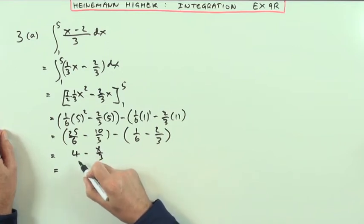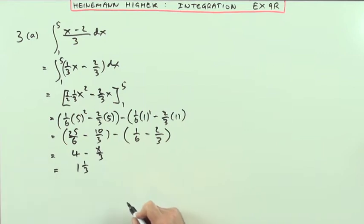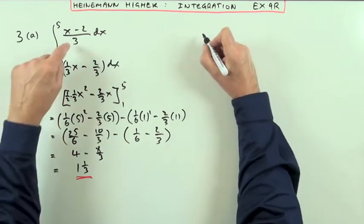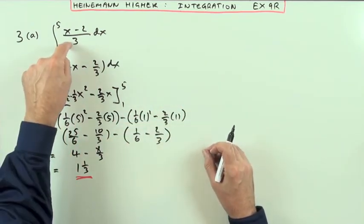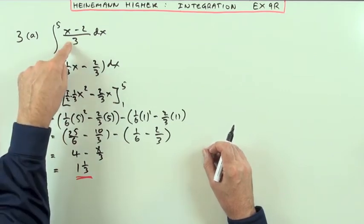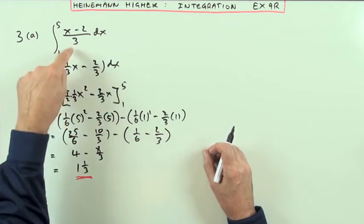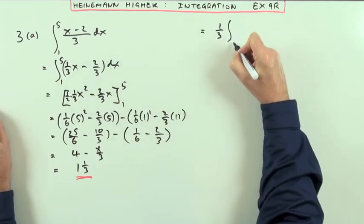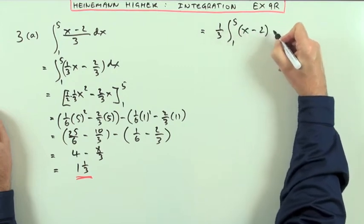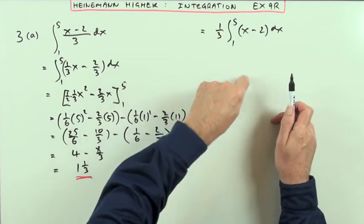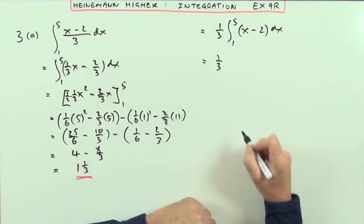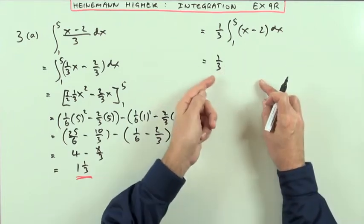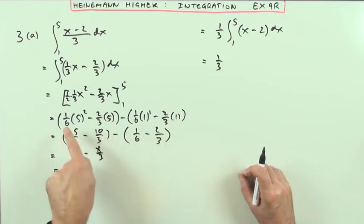8 over 3 is two and two thirds, and two and two thirds away from 4 leaves one and one third. So your answer is one and one third, or equivalently four thirds. An alternative approach: notice the common factor — all those fractions came from the little 3 sitting at the bottom, which infected every single term. Since it's common to everything, you could factor that third out and just leave x minus 2 inside.